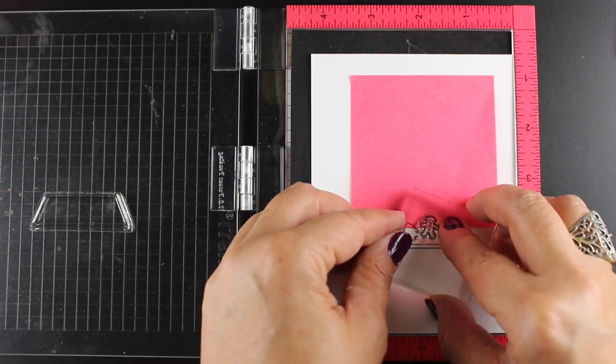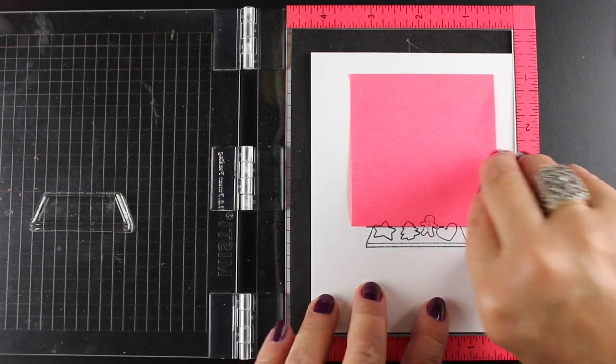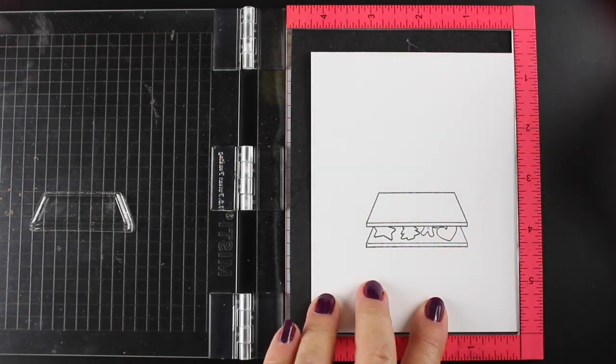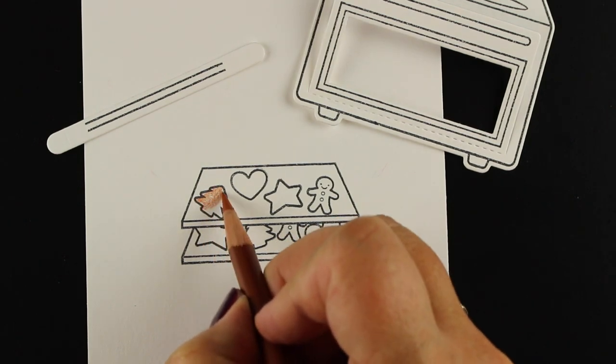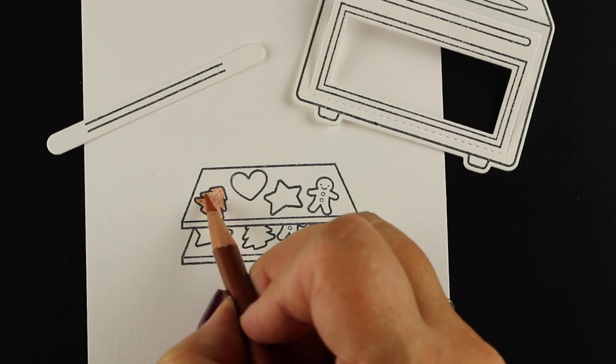And like I said, there are some frosting-only pieces. So if you're not going to hand-color them, I'm going to color mine with colored pencils. If you're not going to hand-color them, you can stamp with some ink. And they're solid shapes that are a little smaller than these, so it'll look like frosting.